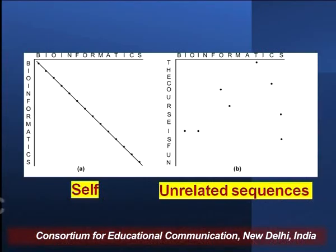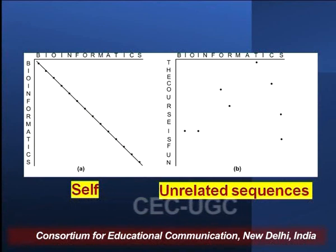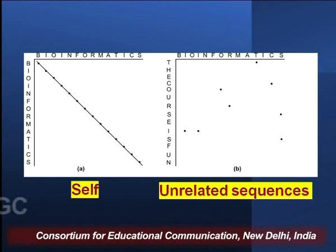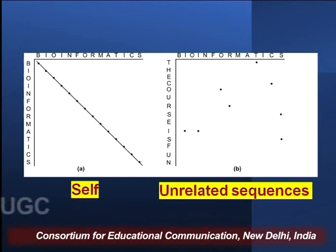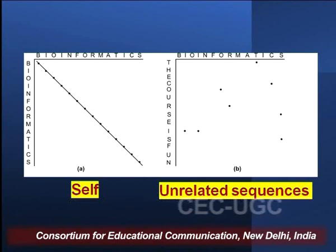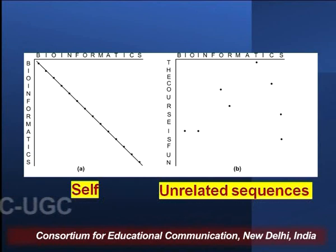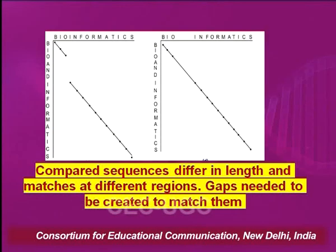In the first example, I am comparing the sequence 'bioinformatics' with itself — a self-comparison — and it gives an exact diagonal with no disturbance of any type. So when we have a self-comparison, we get a principal diagonal. If we compare unrelated sequences, the dot plot will not show any relation, as you can see on the right side.